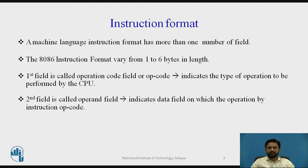For every instruction executed in the 8086 microprocessor, an instruction format is available — that is, the binary representation of that instruction. A machine language instruction format has more than one field. The 8086 instruction format varies from 1 to 6 bytes in length, depending upon the addressing modes used. The first field is called the operational code field, which indicates the type of operation to be performed by the CPU.